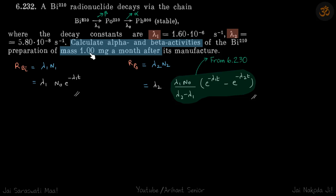What do we need to find? We need to calculate the activities. So activities are lambda n, and lambdas are given, so we need to find n for each. So for bismuth, n will be simply n naught e^(-lambda_1*t).